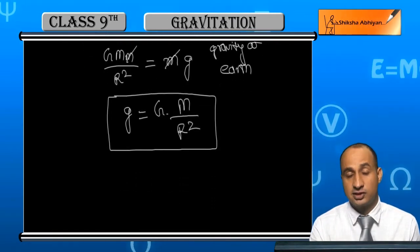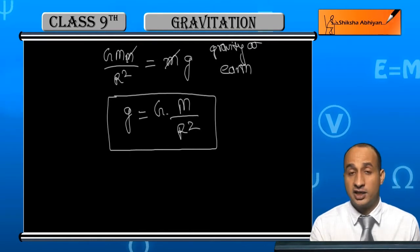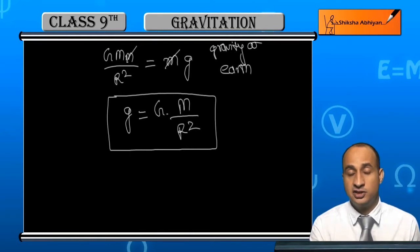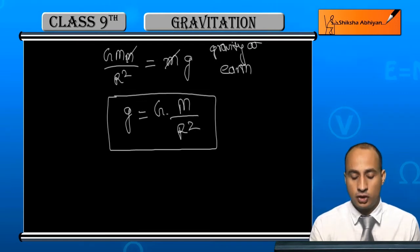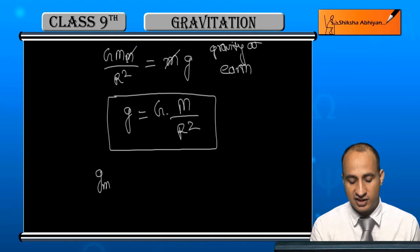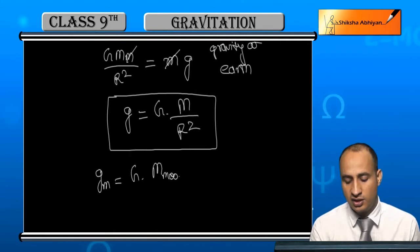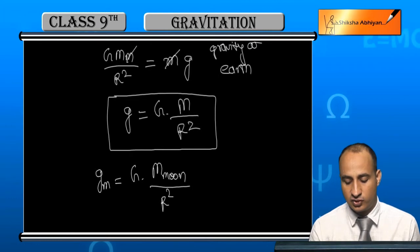For any heavenly body, if mass and radius are given, you can find the relation between gravitational constant and gravity due to that heavenly body. If you calculate this for moon, gravity on moon will be g = G × mass of moon / (radius of moon)².